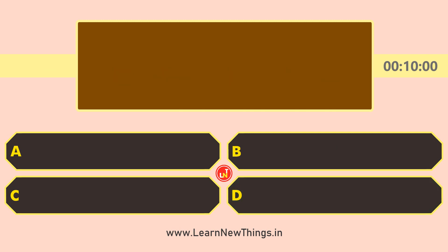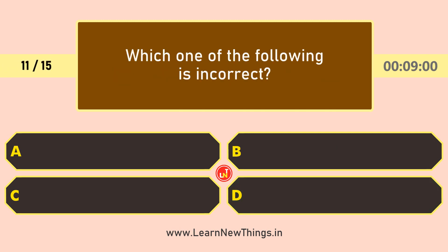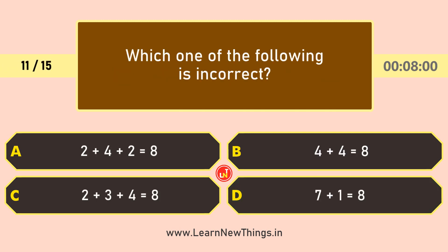Which one of the following is incorrect? The incorrect option is 4 × 3 = 8.